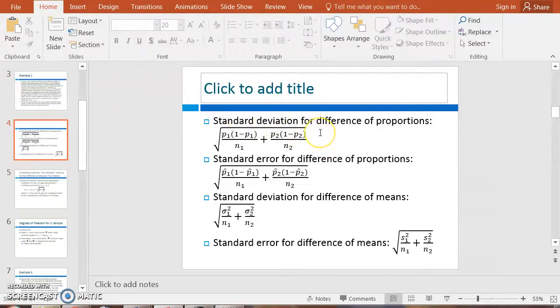The first one is used in sampling distributions. The second one is used when we are doing confidence intervals. It's the same thing down here. Standard deviation for difference of means. This guy right here uses sigma, that's population standard deviation. We use that for sampling distribution. But when it comes to confidence intervals, we do not know that. So we have to use S, our sample standard deviation. That's our standard error.